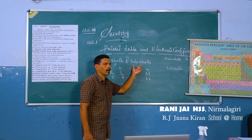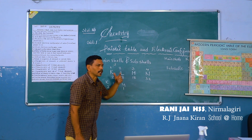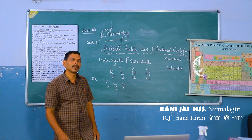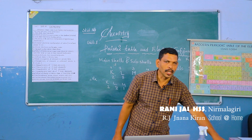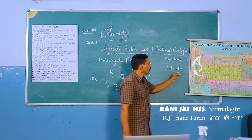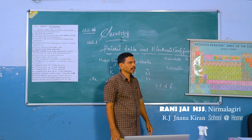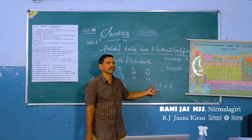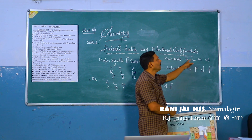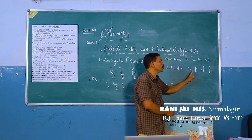Now if we go further and learn the sub-shell configuration — main shells are again divided into various sub-shells. Children, note the names of sub-shells: S, P, D, and F. These are the sub-shells. Main shells are K, L, M, N, O and the sub-shells are named S, P, D, F.